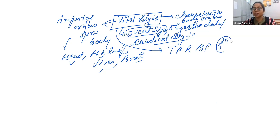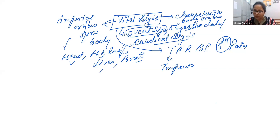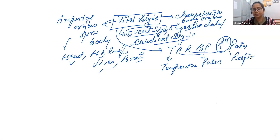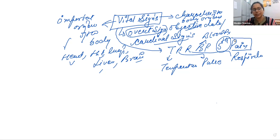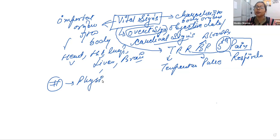In vital signs we use the abbreviation TPR — very important — then blood pressure, and the fifth vital sign that has been included is pain. T stands for temperature, P stands for pulse, R stands for respiration, and BP means blood pressure. Pain is also called the fifth vital sign. Vital signs give us information about the physiological functions of the body.